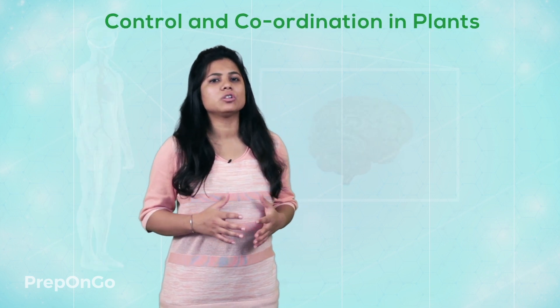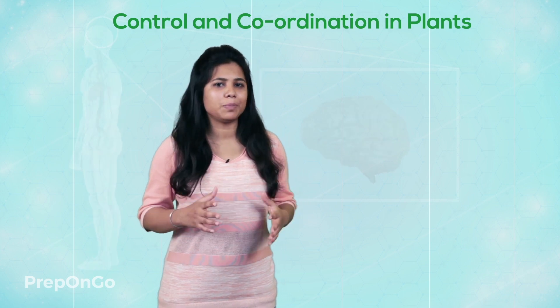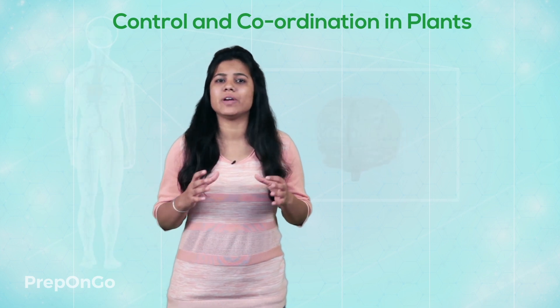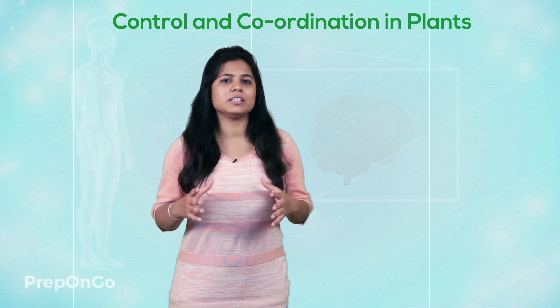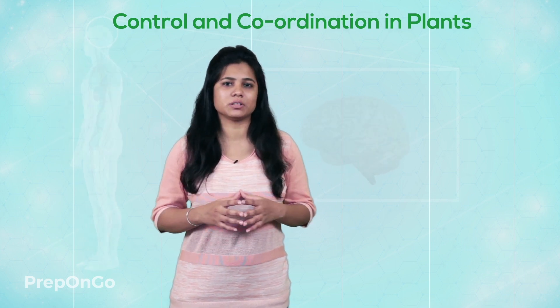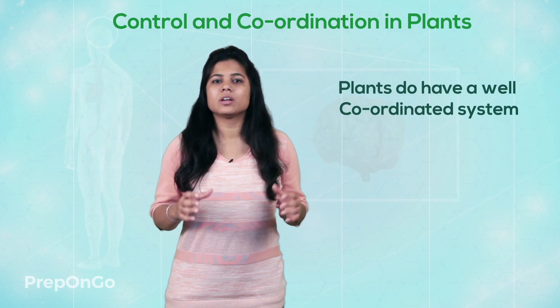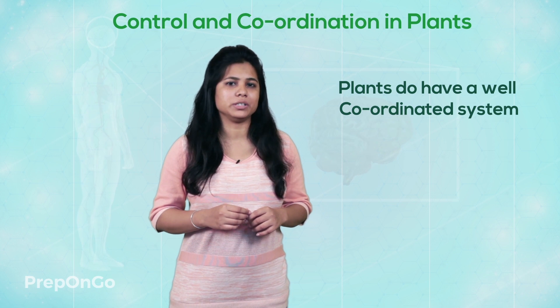Hello everyone. In the previous videos we have seen the control and coordination in human beings. Now let's have a look at the control and coordination of plants. When you look at plants, they don't seem to have a well-coordinated system — you must have seen them growing anywhere they find space. But this is not true; they are coordinated, but not as finely as human beings.